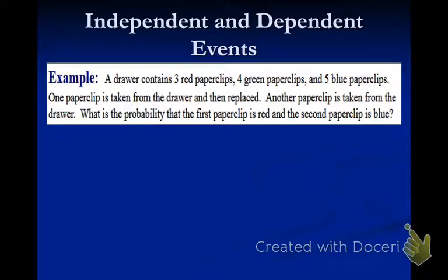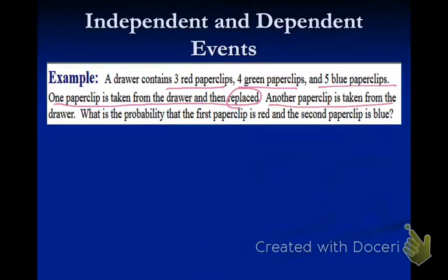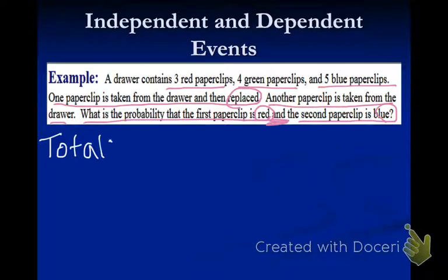A drawer contains three red paperclips, four green paperclips, and five blue paperclips. One paperclip is taken from the drawer and then replaced, and another paperclip is taken from the drawer. What is the probability that the first paperclip is red and the second paperclip is blue? The first thing we should do is calculate the total: three plus four is seven, plus five is twelve. There are twelve total paperclips.